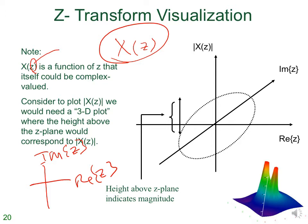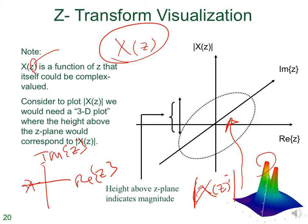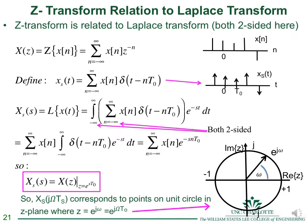So X(z) is a four-dimensional object: z has two dimensions and X(z) has two dimensions. Typically you might plot the magnitude of X(z) as a surface above the z-plane. A pole in the z-plane means there is an infinitely high point in that third dimension — the z-plane and Laplace plane only show part of the picture.